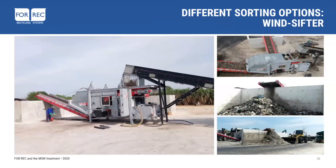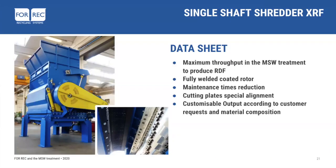At the end of the line, to help guarantee the final RDF quality, we typically install a wind sifter. This machine divides the heavy fraction from the light fraction. The light fraction is the good part — the material then addressed to electricity preparation or further processing. The heavy part contains the foreign bodies that must be removed.